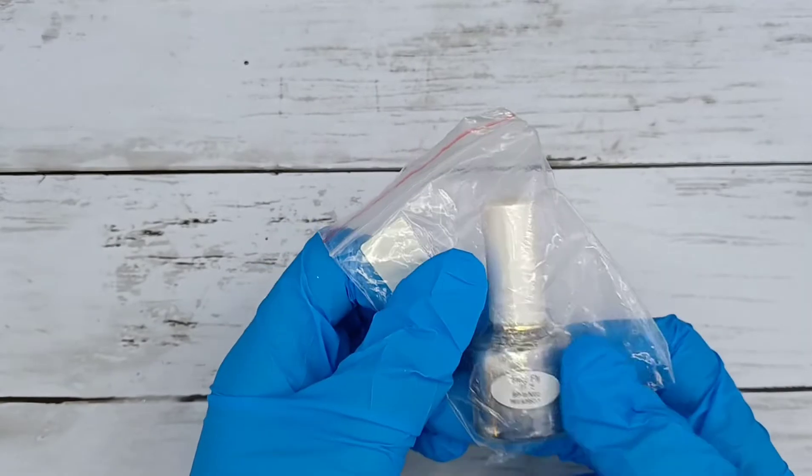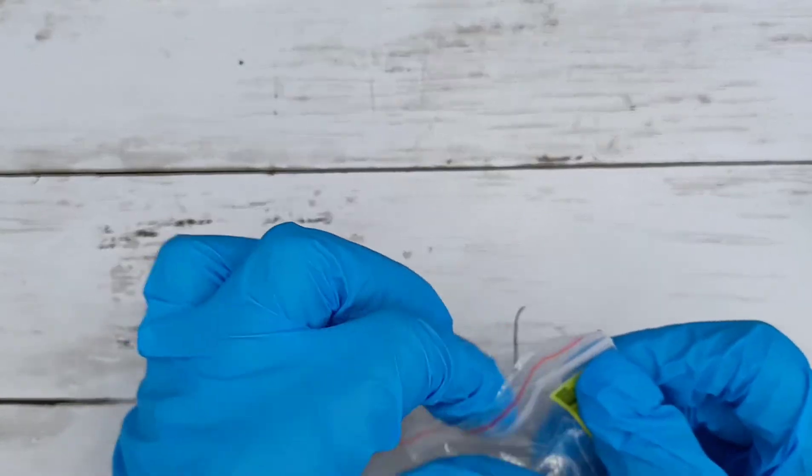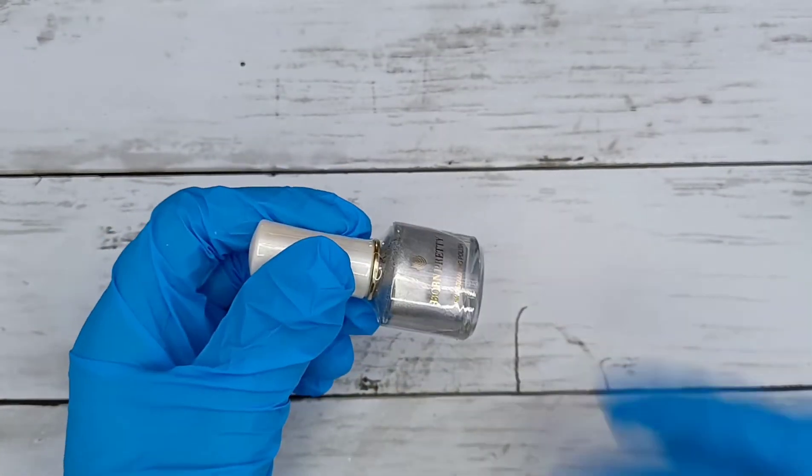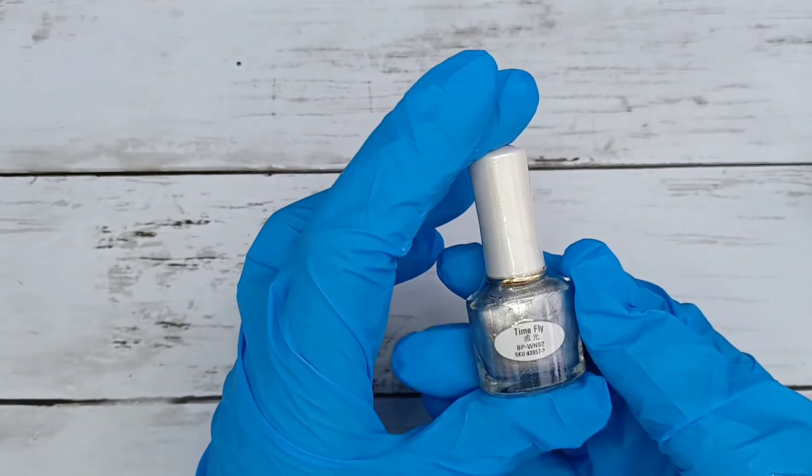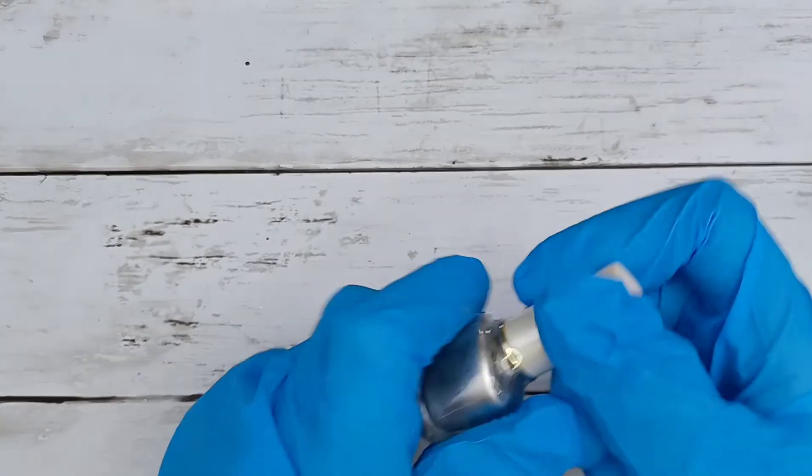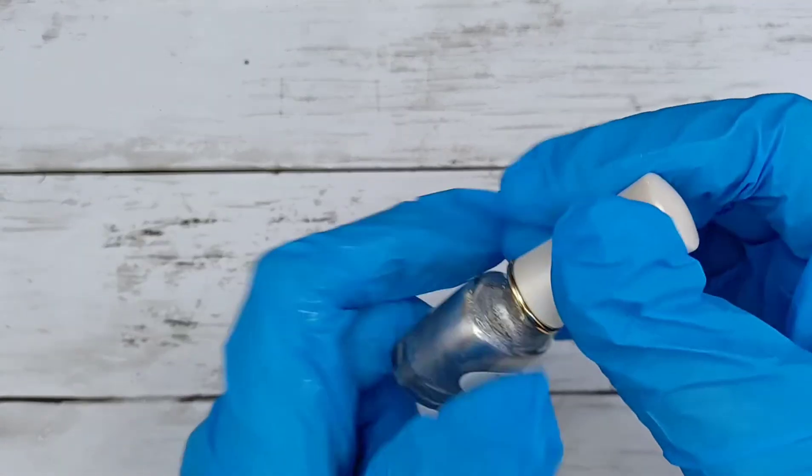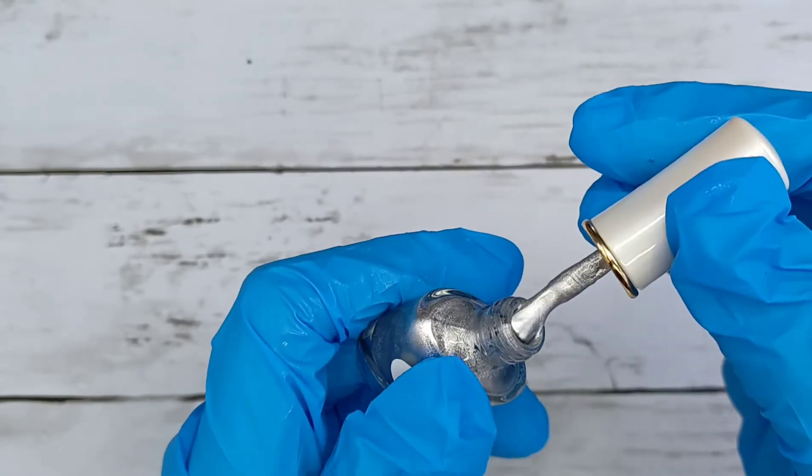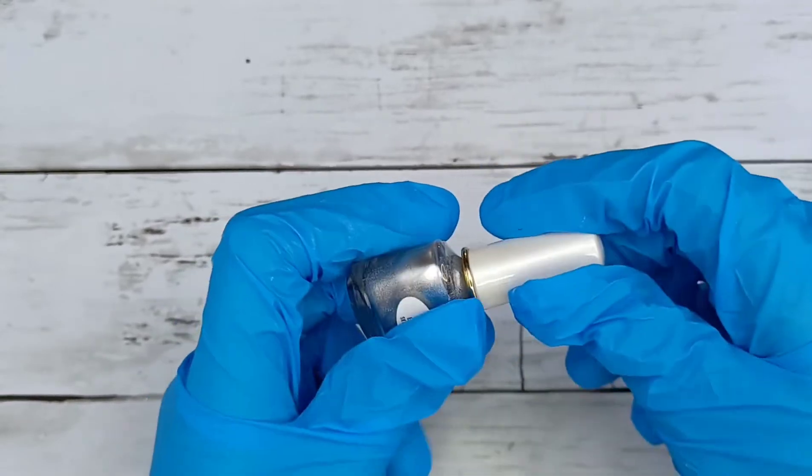And then the last thing I got was just a silver Born Pretty Stamping Polish because I have got their black and their white and it is fastly becoming one of my favorite stamping polishes. So now we've got silver which is called Timefly. The Born Pretty names never really make much sense but they are great polishes. So I'm just going to quickly show you the colors out of the bottle. I will speed this bit up so we're not here forever.